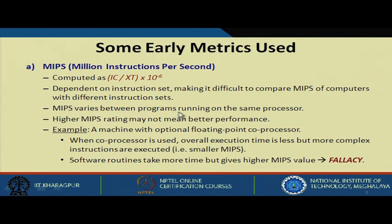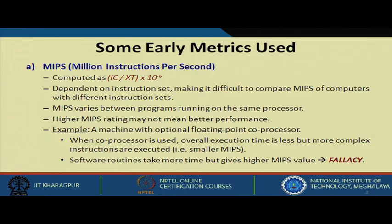MIPS also varies between programs running on the same processor. Why? Because different compilers will generate different code. If you run a particular program and the compiler generates a different set of instructions, the MIPS will be different. It has also been observed that a higher MIPS rating may not mean better performance — we cannot say that a high MIPS rating means the system performs much better.